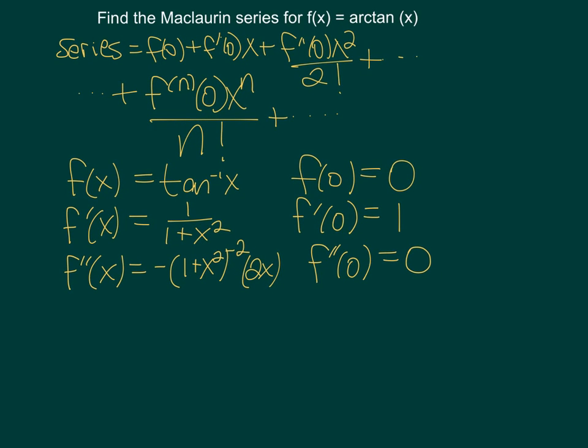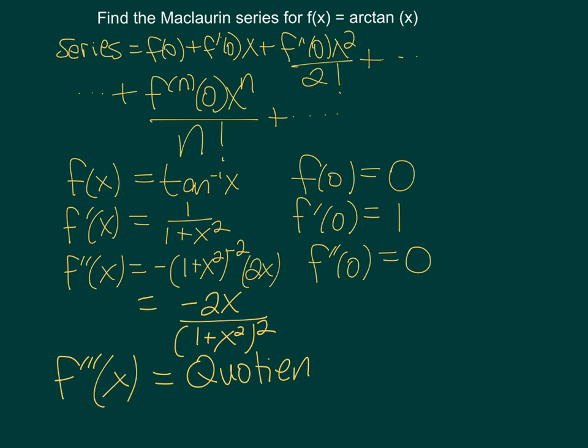But how about the next derivative? Maybe we should rewrite the second derivative as a fraction: -2x over (1 + x²)². Now to find the third derivative, we have to use the quotient rule. Do I hear groaning? It does look like it's going to get messy. Perhaps there's a better way. So let's back this up for a minute.